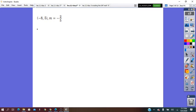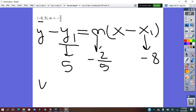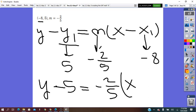The slope is given, so y minus y1 equals m times x minus x1. The slope, negative 2/5, negative 8 is the x1, and the y1 is 5. We substitute y minus 5 equals negative 2/5 times x, negative negative, plus 8.